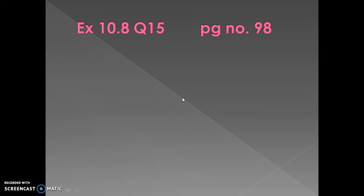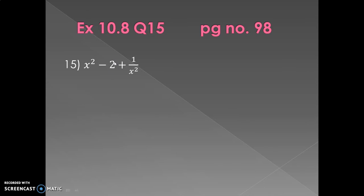Similarly we have question number 15. It is x² - 2 + 1/x². We can see that we have the square of the first term and the square of the last term, and a 2 in the middle. If we want to use the formula we should have 2ab in the middle. For this question, 2ab will be 2 · x · (1/x). Let me write this out so it will be clearer.